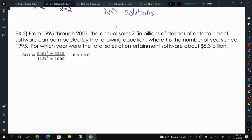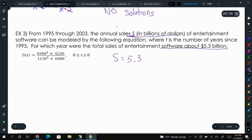So example number 3 here is a word problem. From 1995 through 2003, the annual sales S in billions of dollars of entertainment software can be modeled by the following equation, where T is the number of years since 1995. For which year were the total sales of entertainment software about $5.3 billion. So what this means is that my S is 5.3, because sales is in billions of dollars.